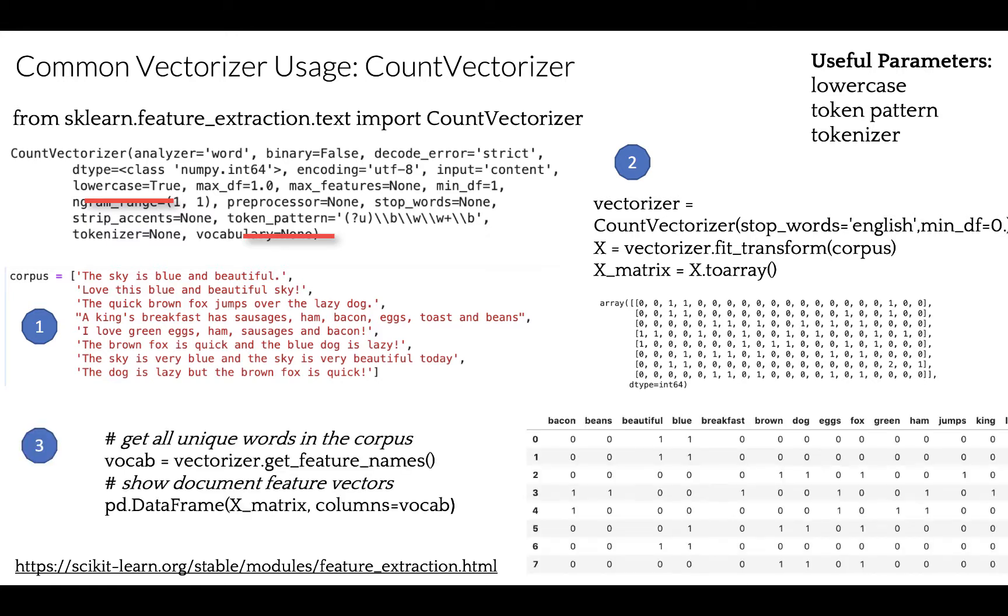During the fit, each term found by the analyzer will be given a unique integer index, corresponding to a column in the resulting matrix. You can clearly see that each column or dimension in the feature vectors represent a word from the corpus, and each row represents one of our documents, and we have eight documents. The value in any cell represents the number of times that word occur in a specific document.